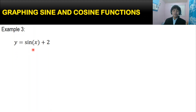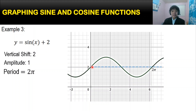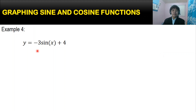For our third example, y equals sin(x) + 2. We have a vertical shift of 2. The amplitude is 1 and the period is 2π. In the graph, the vertical shift of 2 is now the center of our graph, not the x-axis. The values repeat every 2π. The domain is the set of all real numbers, and the range has a minimum value of 1 and a maximum value of 3.